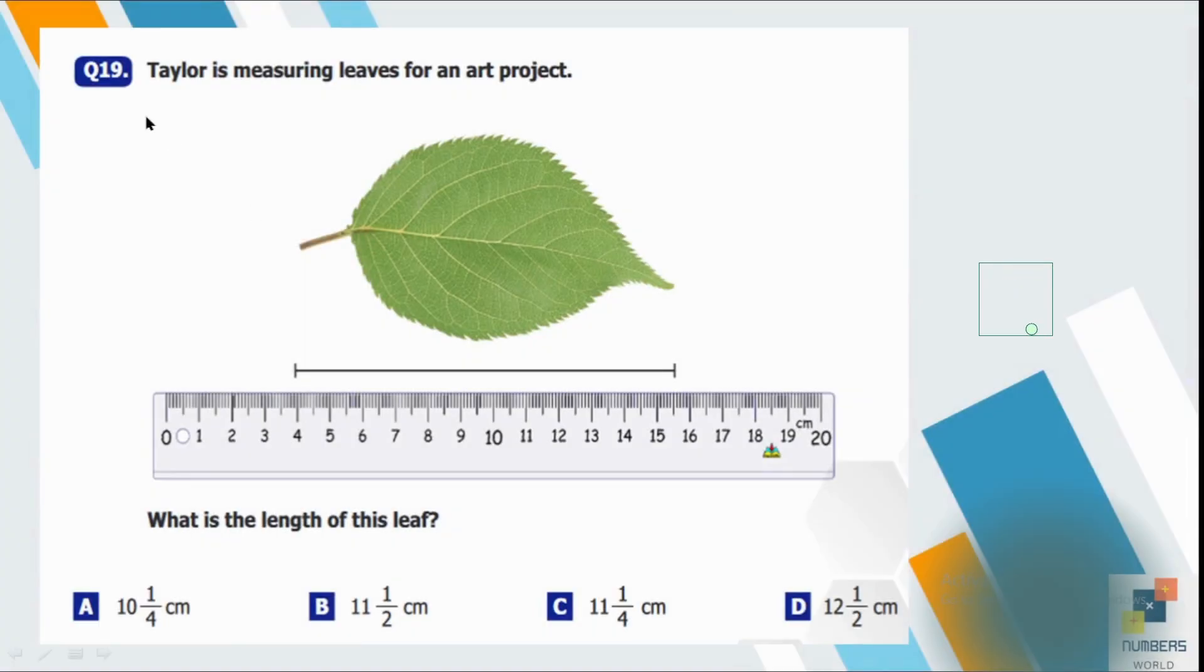Question number 19. Taylor is marrying leaves for an art project. What is the length of this leaf? So we will start from here 4 to 5? 1, 2, 3, 4, 5, 6, 7, 8, 9, 10, 11, 11 and half. So we will simply count the number of jumps from 4 till 15. There are 11 jumps and then there is half. So B is our correct option.